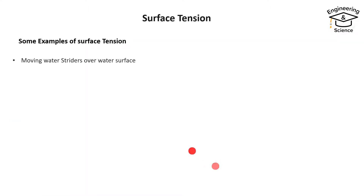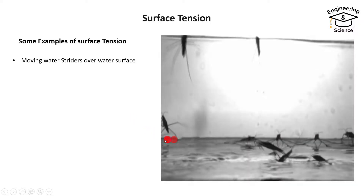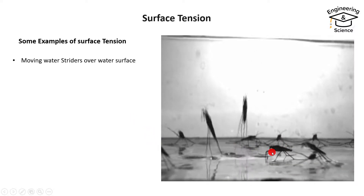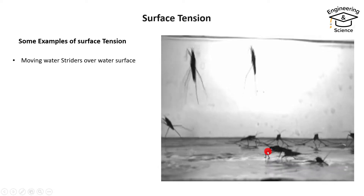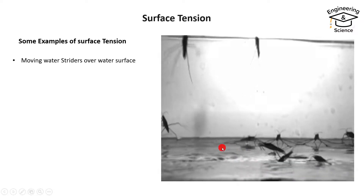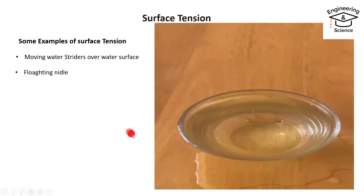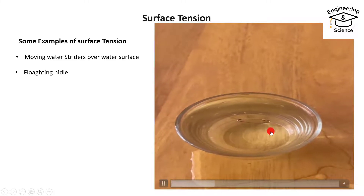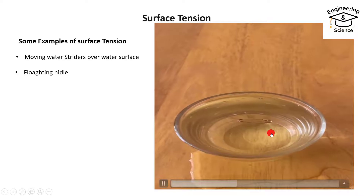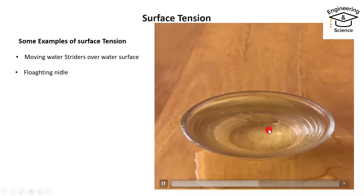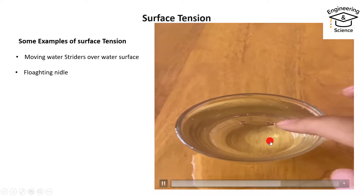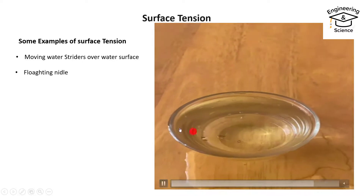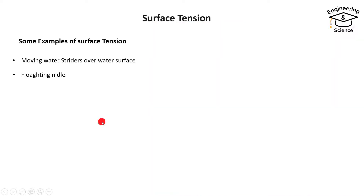Some examples of surface tension: water striders moving over the water surface — you can see these water striders standing and moving over the surface of water. Also, a floating needle — you can see this needle floating over the water even though it has a density higher than water. If you break the surface layer, it submerges, as you can see.